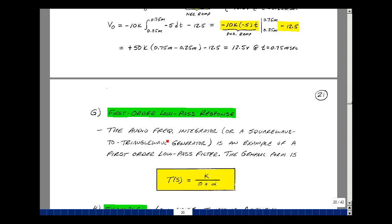Then lastly, we call our audio frequency integrator, which took a square wave and converted it to a triangle wave. As an example, what's called a first-order low-pass filter. In other words, the general form of the transfer function is some k over s plus alpha. These are some of the properties of an audio frequency integrator.